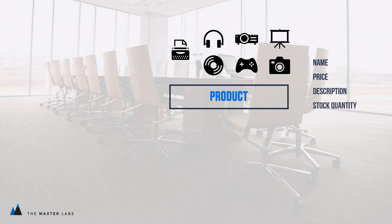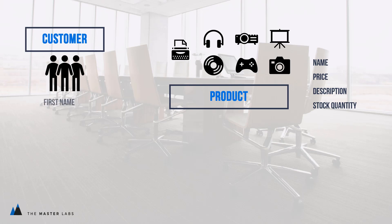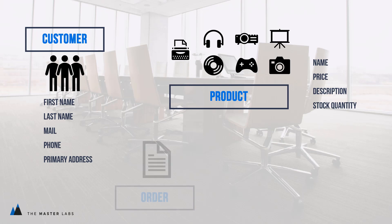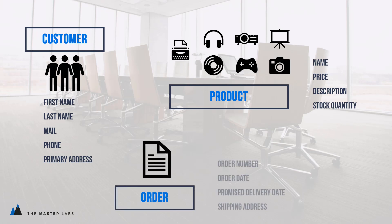They had customers as well. For each customer they kept track of first name, last name, email, phone and primary address. I didn't mention email and phone before, but you can imagine that we want to keep track of these things. They also have orders — each order has an order number, order date, promised delivery date and a shipping address.